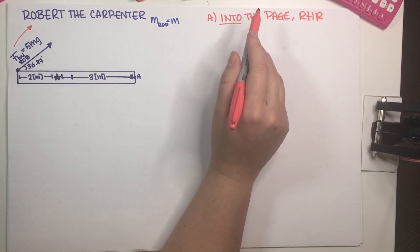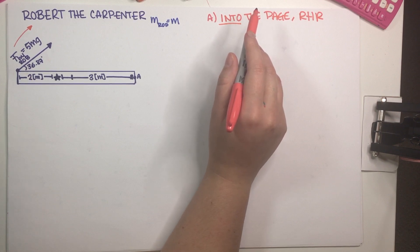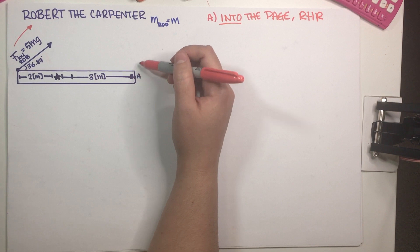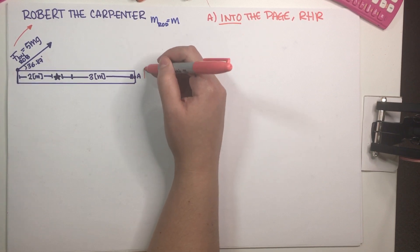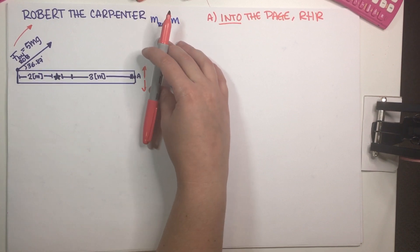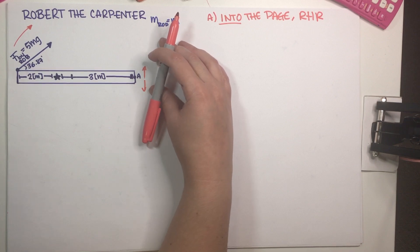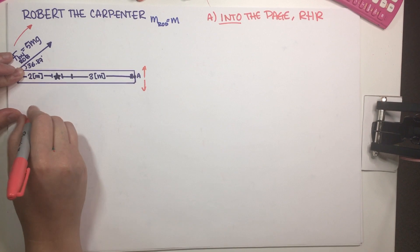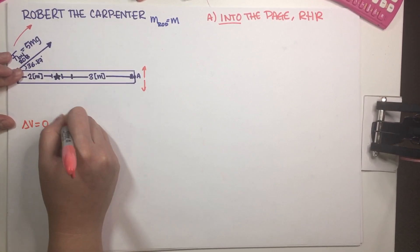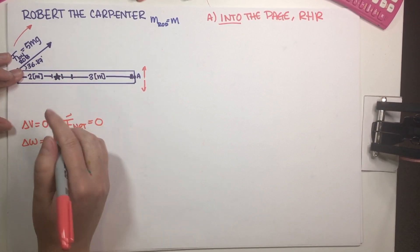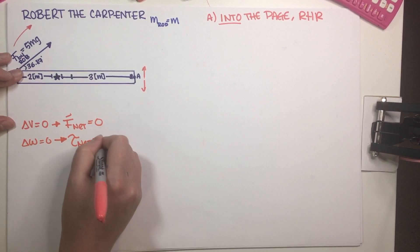Now for Part B: you exert a force at point A only in the vertical direction and prevent the rod from rotating. We need to figure out the direction — up or down — and the magnitude of the force. Be aware that the problem does not specify direction, so we have to determine it. Since the bar is not moving in space and not rotating, our net force equals zero and our net torque equals zero.